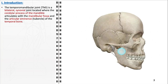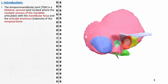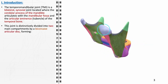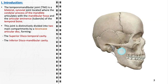The temporomandibular joint is a bilateral synovial joint situated at the juncture where the condylar process of the mandible articulates with the mandibular fossa and the articular eminence of the temporal bone. The superior discotemporal cavity and the inferior discomandibular cavity, separated by the biconcave articular disc, play pivotal roles in the biomechanics of the temporomandibular joint. This articular disc functions as a cushion, effectively distributing forces generated during jaw movements and minimizing friction. Notably, the disc adapts its shape to accommodate diverse jaw movements.